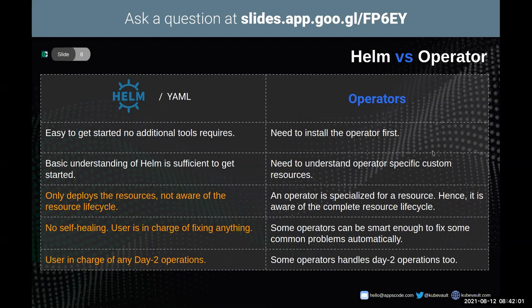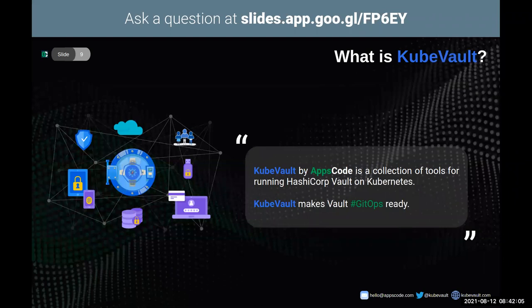Considering these pain points and use cases, KubeVault came into the picture. KubeVault by AppsCode is a collection of tools for running HashiCorp Vault on Kubernetes. The KubeVault operator makes it easy to deploy, maintain, and manage Vault servers in Kubernetes. It also supports various secret engine management and policy management in a Kubernetes-native way. As a result, you can use GitOps with Vault server management — KubeVault makes Vault GitOps-ready.